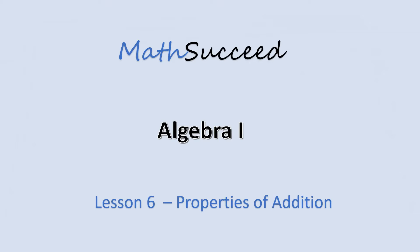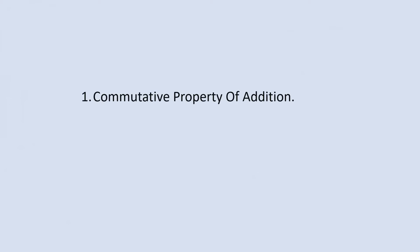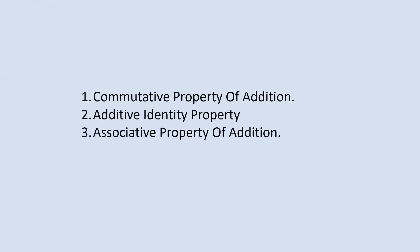Hello friends, welcome to MathSucceed Algebra 1 tutorial. In this lesson, you are going to learn about properties of addition. In my last video, I talked about addition of real numbers. There are some properties of real numbers that are important in algebra. After completing this lesson, you should be able to recognize the properties of addition in algebraic expressions. You are going to learn about commutative property of addition, additive identity property, associative property of addition, and distributive property of addition. These properties set the rules of algebraic manipulation that involve additions.